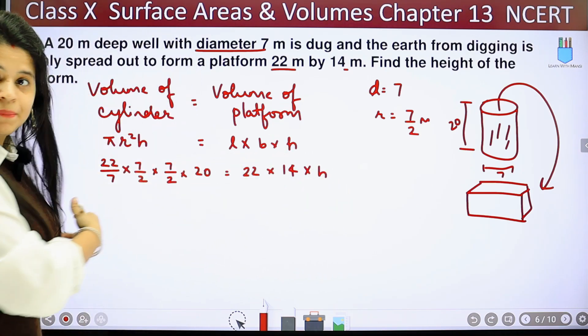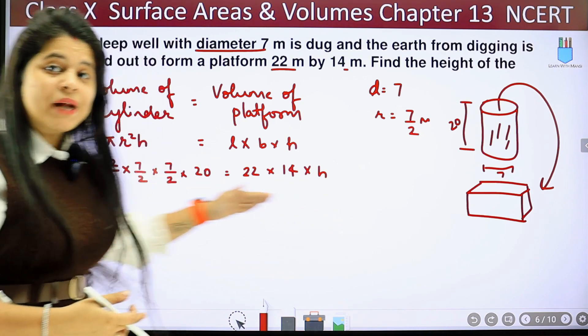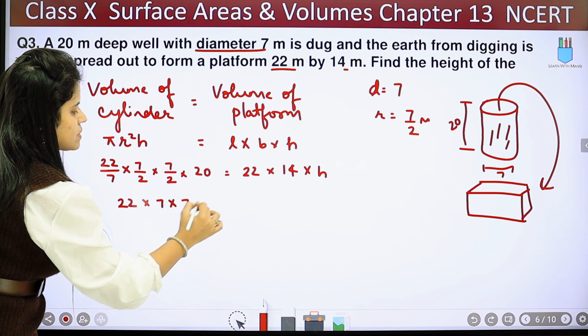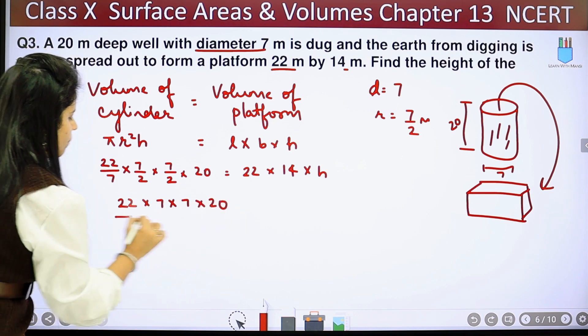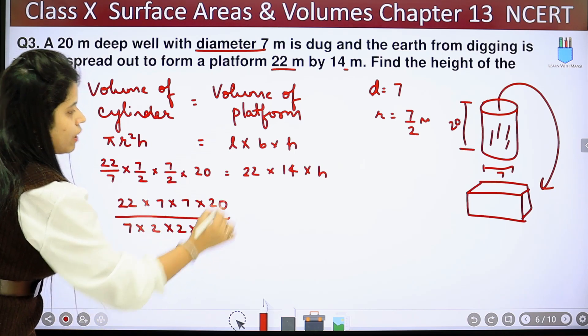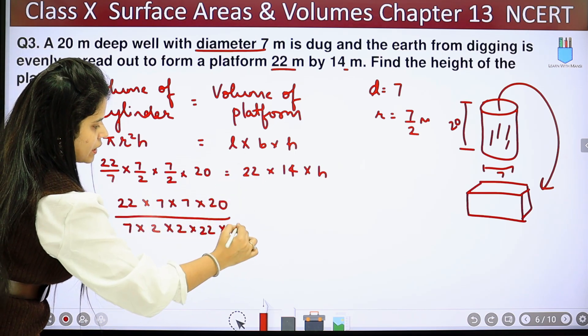Okay, before solving this, we take it here. So this will be multiplied. We already have 22 into 7 into 7 into 20. Now, what is it? 7 is, 2 is, 2 is, 2 is. And from here, it will be 22 and 14. This will be equal to h.